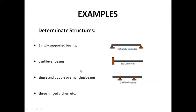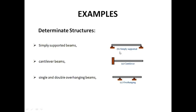Some examples of determinate structures are: a simply supported beam, a cantilever beam, a single or double overhang beam, and a three-hinged arch. A simply supported beam is an example of a determinate structure. A cantilever beam is also an example of a determinate structure. A single or double overhang beam is also a determinate structure.